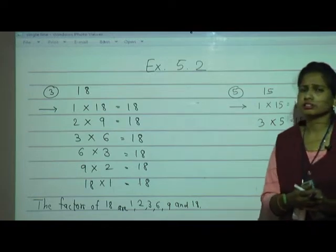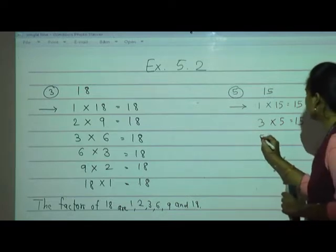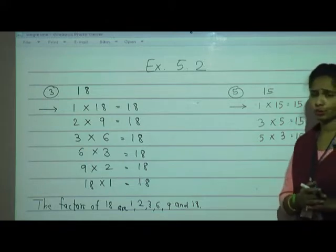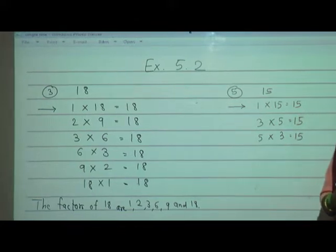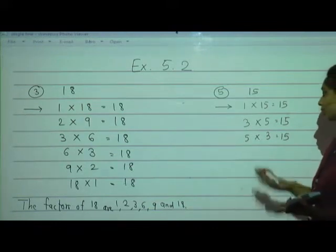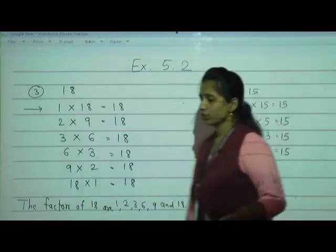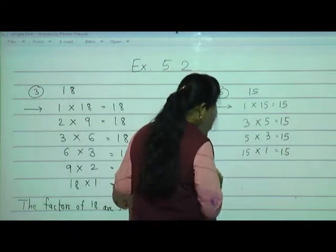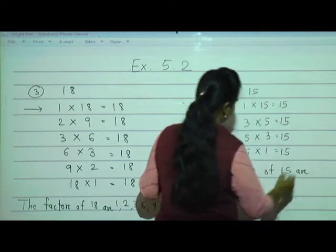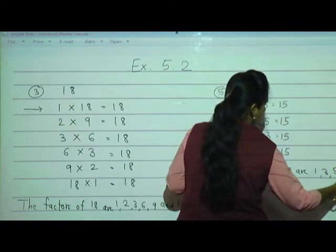What about 4? 4 threes are 12, 4 fours are 16 — 15 is not there. What about 5? 5 threes are 15 — yes. What about 6? 6 twos are 12 — no. 7 twos are 14, 8 twos are 16, 9 twos are 18, 10 twos are 20 — none of these give 15. Then directly, 15 ones are 15. The factors of 15 are: 1, 3, 5, and 15.